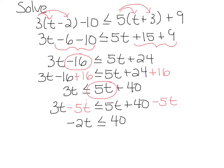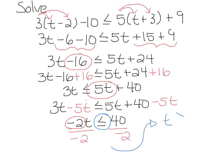Now to eliminate the negative 2, we're going to divide both sides by negative 2. Since we divided by a negative, this inequality sign is going to be flipped to a greater than or equal to sign. So my final answer is t greater than or equal to negative 20.